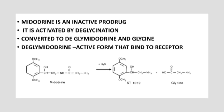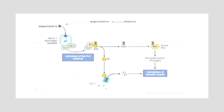ST-1059 is the name given to desglymidodrine by pharmaceutical companies during manufacturing. Looking at the cellular mechanism: desglymidodrine, the active metabolite, has binding affinity specifically with alpha-1 receptors in the peripheral blood vessels. Alpha-1 is a G-protein coupled receptor; when desglymidodrine binds, the alpha subunit moves to phosphatidylinositol-4,5-bisphosphate (PIP2), activating the phospholipase-C mechanism, which converts PIP2 into diacylglycerol (DAG) and inositol trisphosphate (IP3). DAG activates protein kinase C to amplify receptor signaling. IP3 binds to its receptor on the endoplasmic reticulum, causing release of calcium ions responsible for smooth muscle contraction, resulting in vasoconstriction and ultimately increasing blood pressure.